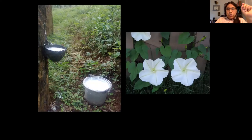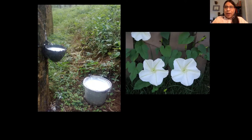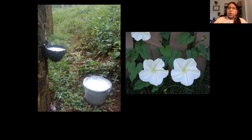They mixed the resin from the rubber tree with a substance present in a flower called Ipomoea alba, a perennial herbaceous plant containing latex with sulfites. The sulfur contained in Ipomoea produces a chemical reaction that allows vulcanization. Sulfur atoms interlace with the rubber chains, turning latex into a resistant and hard material that can be manipulated to create balls.